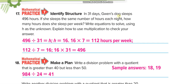In 31 days, Gavin's dog sleeps 496 hours. If she sleeps the same number of hours each night, how many hours does she sleep per week? Write an equation using H as an unknown: 496 ÷ 31 = H. When you divide, H equals 16 hours per day. Then 16 times 7 equals 112 hours per week — we multiply by 7 because there are 7 days in a week.